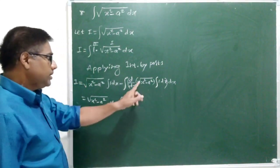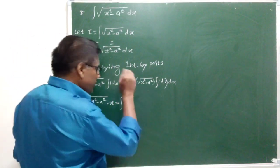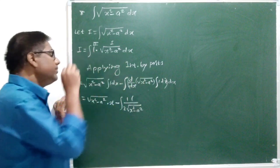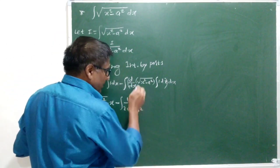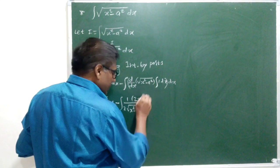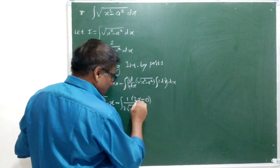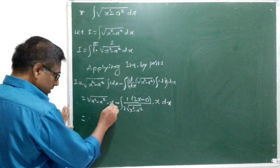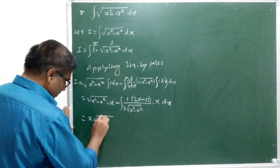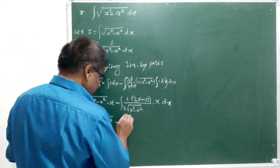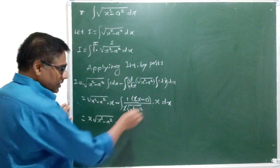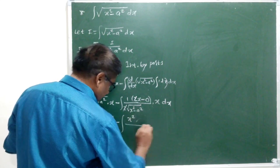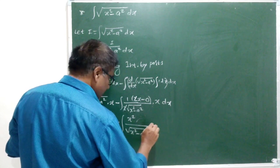This is a composite function. We have to consider x square minus a square as u. The derivative of root u is 1 by 2 root u, so the derivative of root x square minus a square is 1 by 2 root x square minus a square, into the derivative of u, which is 2x. The derivative of x square is 2x and the derivative of a square is 0 because a is a constant. So this 2 will cancel with this 2, and x into x gives x square. Therefore, we get x root x square minus a square minus x square over root x square minus a square dx.